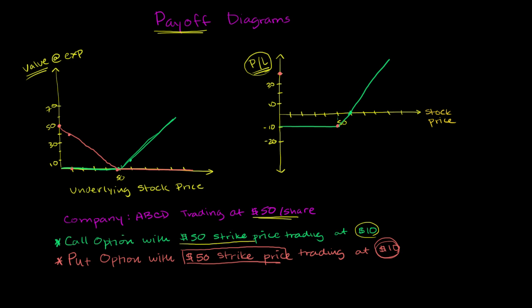So the option starts at $50 and becomes worth less and less, all the way to the point that if you don't exercise it, you took the loss of paying for an option and not exercising it. And then any stock price above that, you just took a $10 loss.